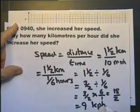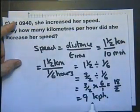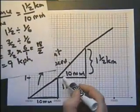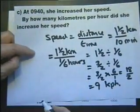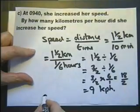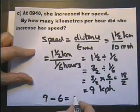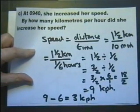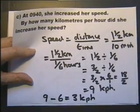Nine kilometers per hour. That is the speed that she travels at between 9:40 and 9:50. The question asks by how many kilometers did she increase her speed, so the answer is 9 kilometers minus 6 kilometers from the first part—this is her increase in speed. Quite a lot to that part, I think you'd agree.